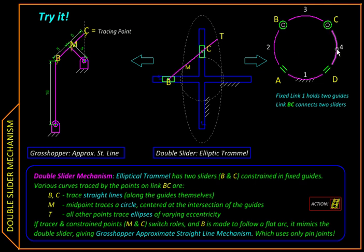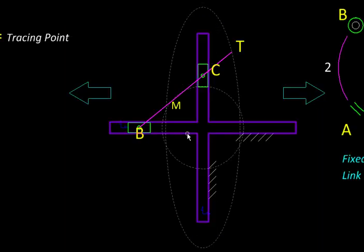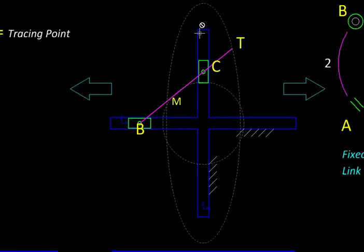Because it has two sliders it is called a double slider and here is one of its applications. This blue link with a cross slot is our fixed link. In it there are these two green sliders and connecting them is this purple link with two hinges at B and C. Midway between the hinges we have taken a point M and on the extension of BC there is another tracing point T.